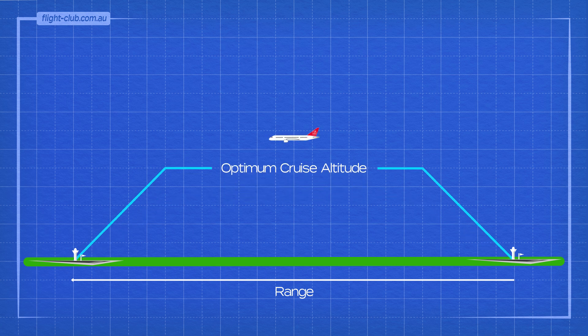Flying higher than the optimum cruise altitude decreases the range of the aeroplane. Flying lower than the optimum altitude also decreases the range of the aeroplane.